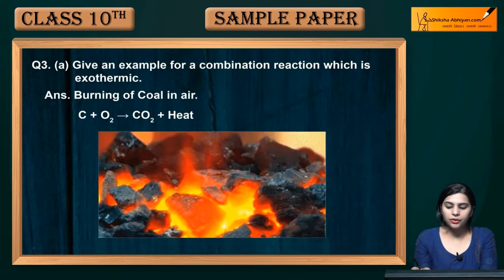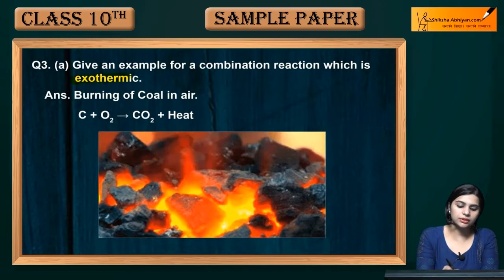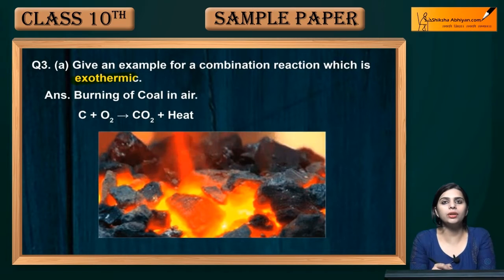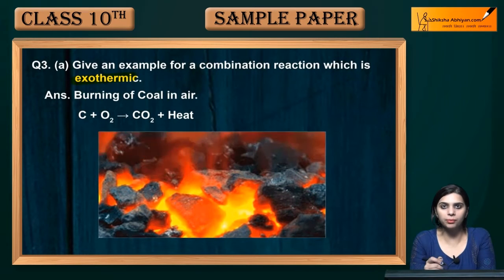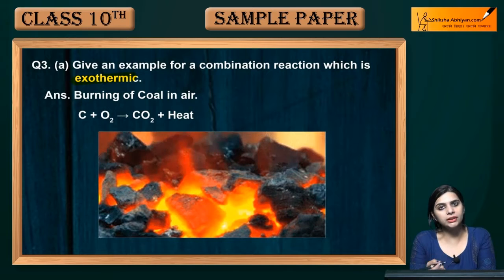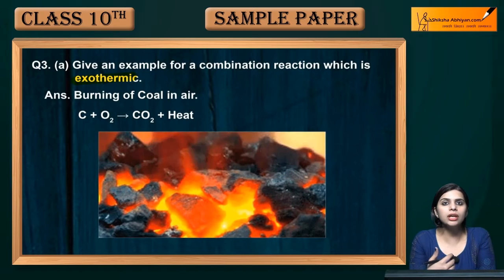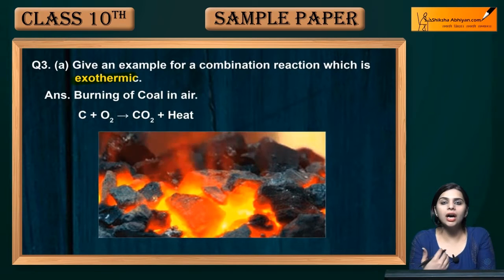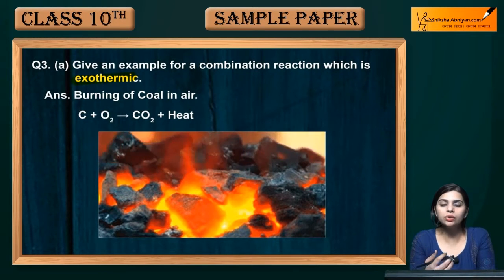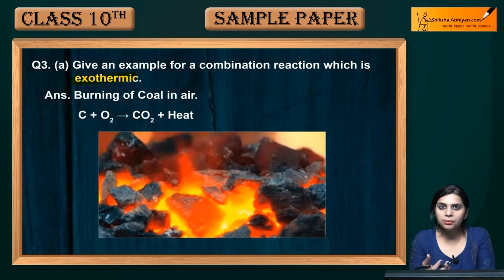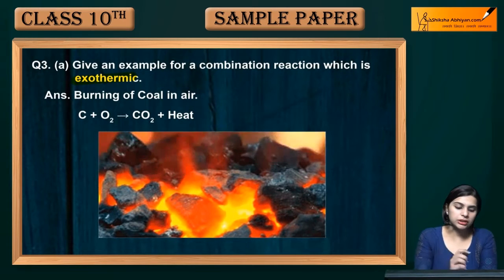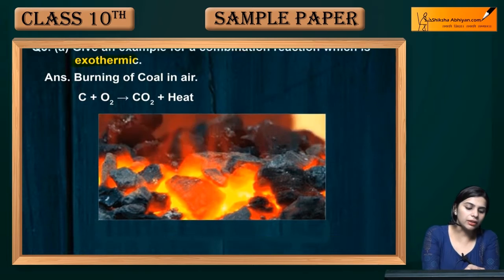Give an example of a combination reaction which is exothermic — a reaction that is both a combination reaction and exothermic. We have two types of reactions: exothermic and endothermic. Exo means energy is emitted or liberated out, and endo means you are supplying or providing heat to your reaction.